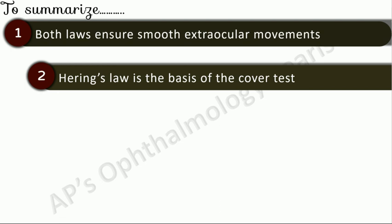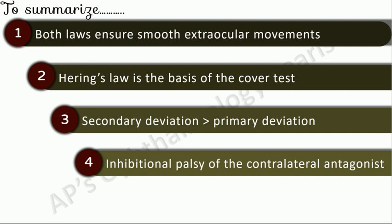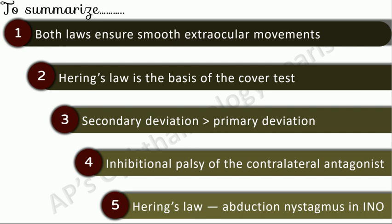To summarize: both these laws ensure smooth extraocular movements. Hering's law is the basis of the cover test. Hering's law explains the secondary deviation being greater than the primary deviation in a paralytic squint. The inhibitional palsy of the contralateral antagonist in a paralytic squint is a consequence of a complex interplay between Hering's and Sherrington's laws. And Hering's law has been advocated as the cause of the abduction nystagmus in internuclear ophthalmoplegia.